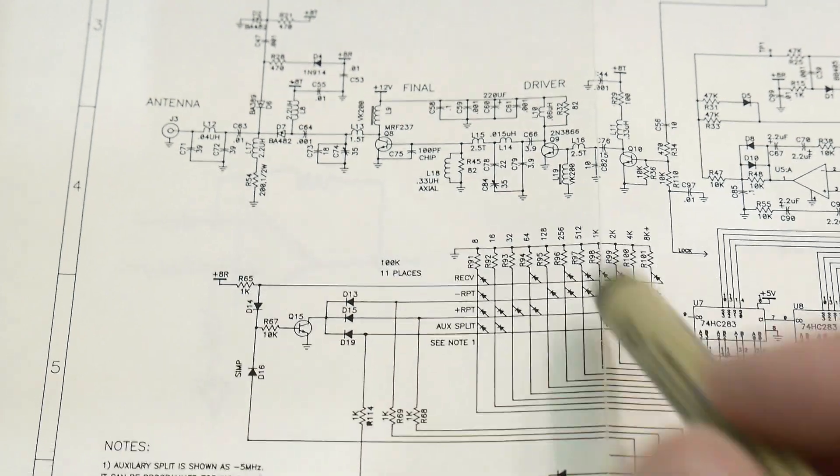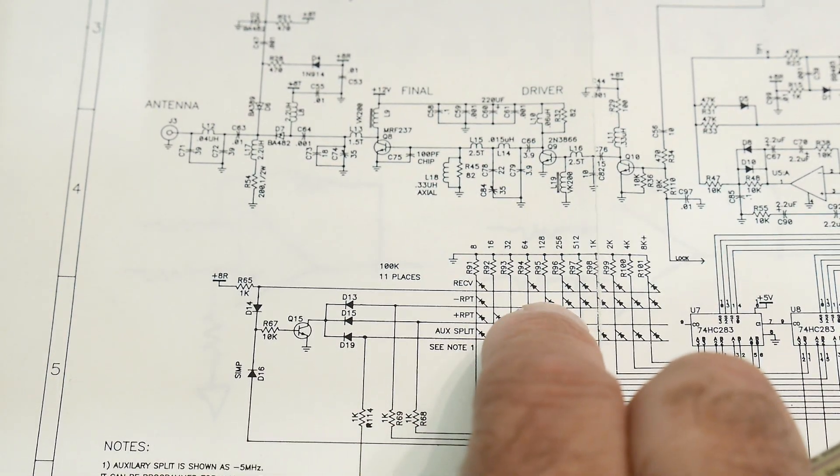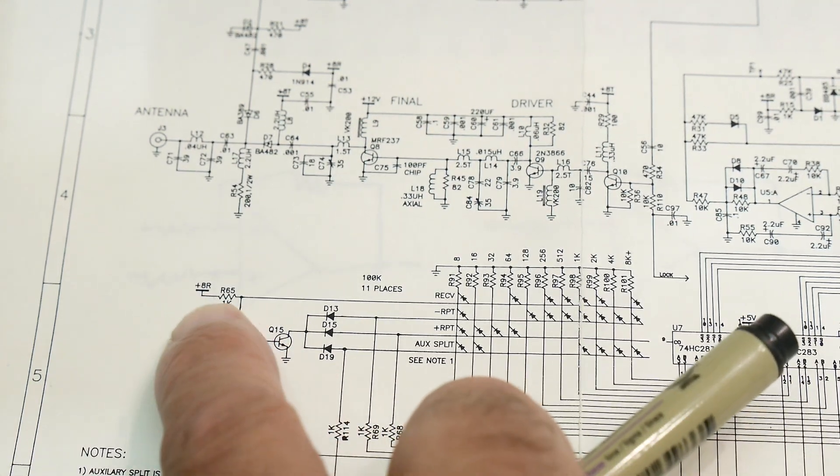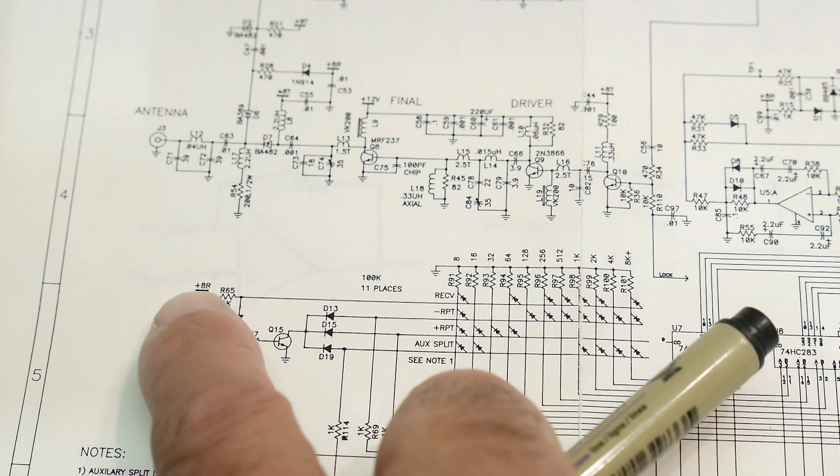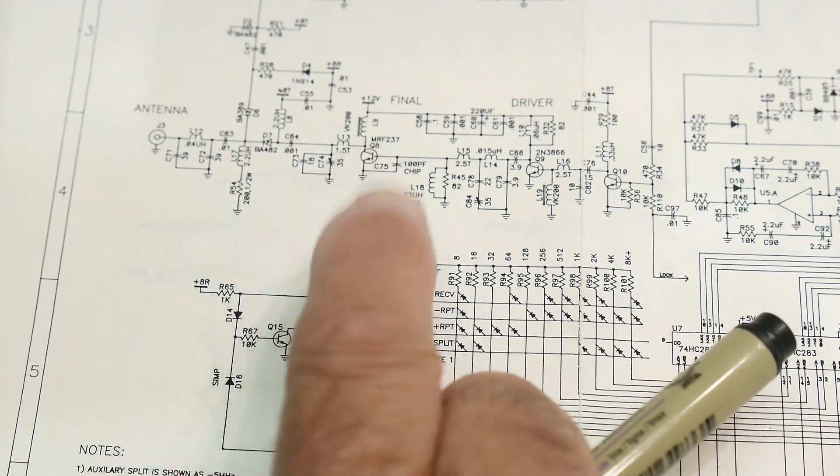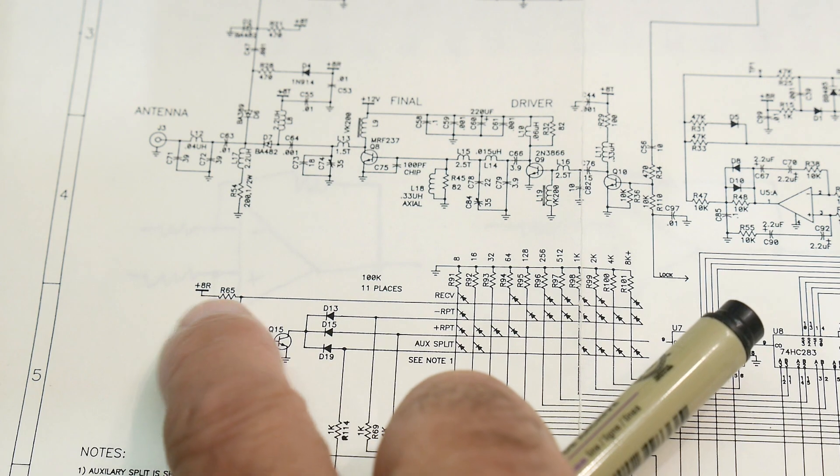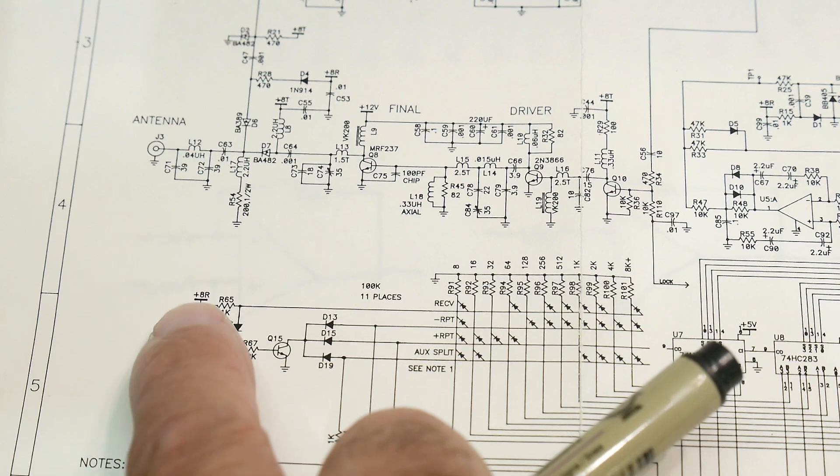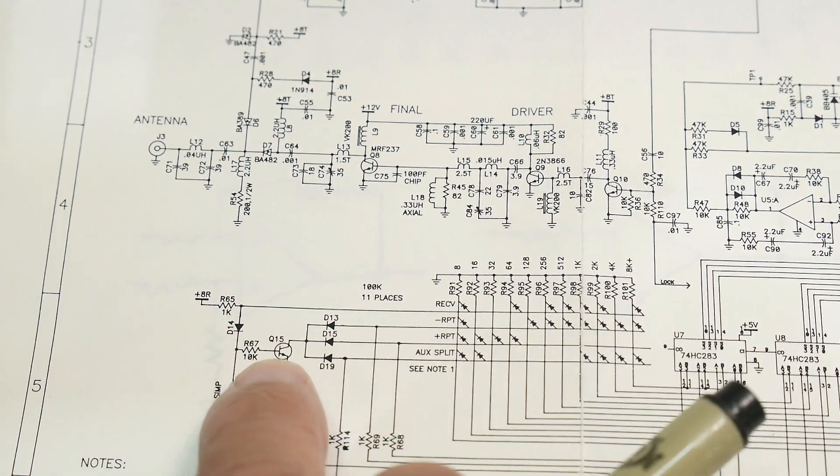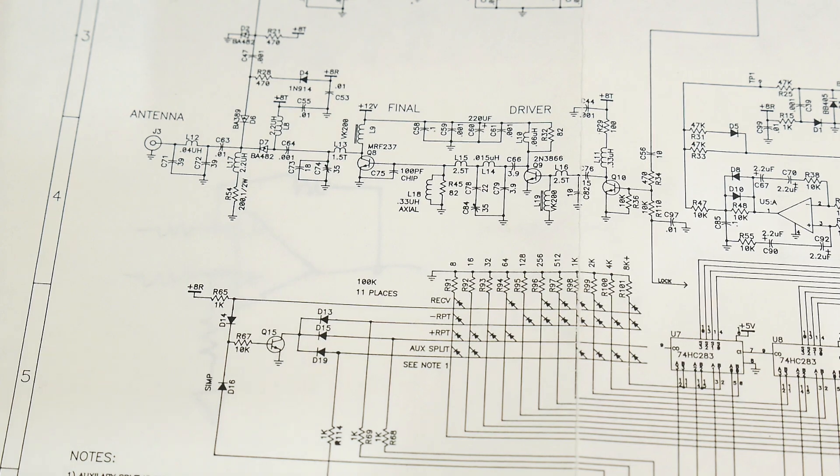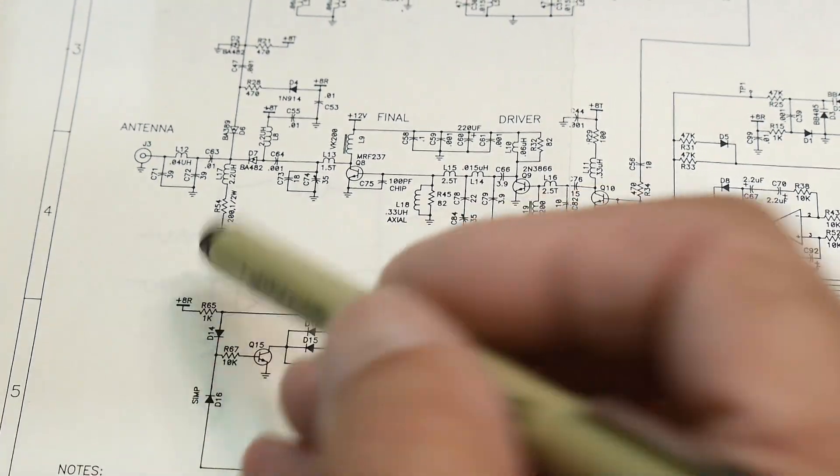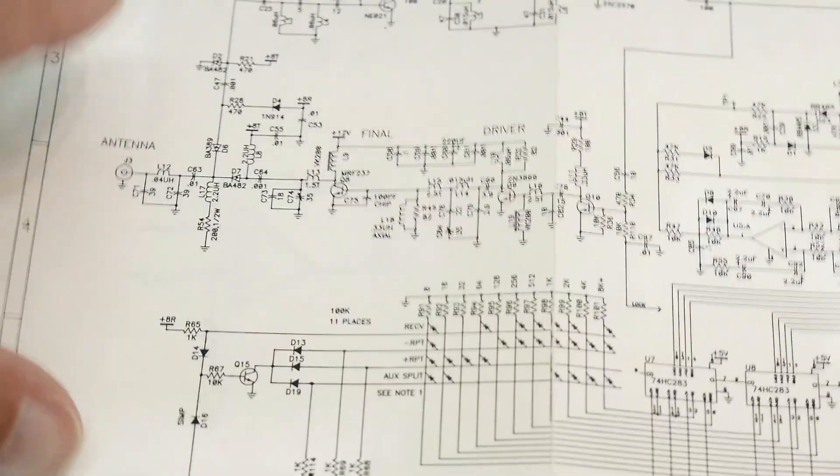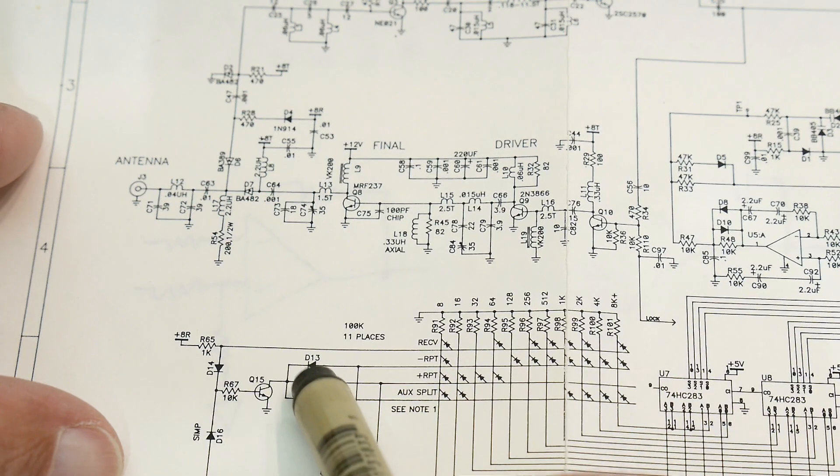How do you enable these things? You enable these things with this transistor here. This transistor is turned on when you have the receive mode set. So this is plus 8R. When the radio is receiving, this becomes plus 8 volts - plus 8 receive. When it's transmitting, obviously that will be low and this won't be on. These diodes here, when this is on, basically ground all of these and make them all zeros.